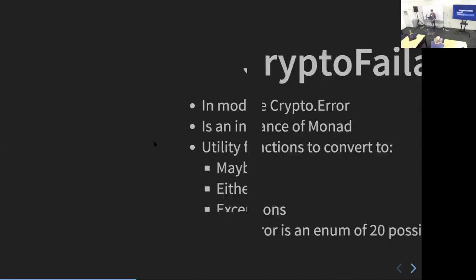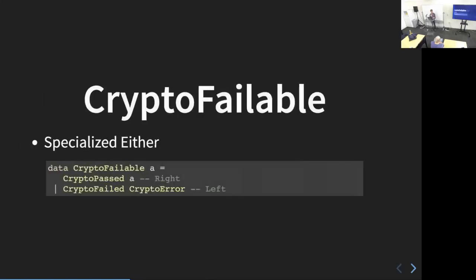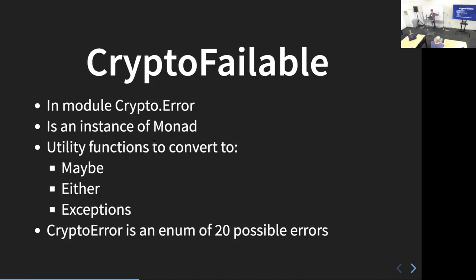CryptoFailable is from the module Crypto.Error in Kryptonite. It's an instance of Monad, so you can use do-notation to perform several cryptographic computations that might fail in order, and it'll short-circuit on the first one that fails. The module includes utility functions to convert that to Maybe, Either, or throw an exception. CryptoError, which is on the left case, is effectively just an enum of about 20 different types of error you can have during cryptography — like your key is too short, or the length of your seed wasn't correct.